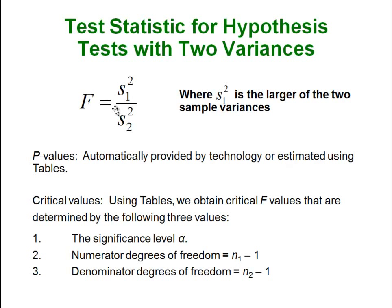Here is our test statistic for an F test — very simply it is just the ratio of the two variances, where s₁-squared is the larger of the two. So you have the larger variance over the smaller variance. Note these are variances, not standard deviations, because they are being squared. F is basically the ratio of those two variances. P-values are always automatically provided by technology; you can estimate them using tables but it is better to use technology.